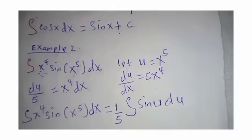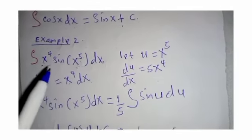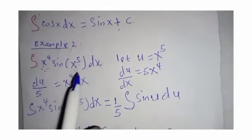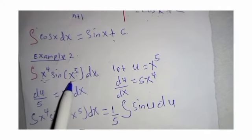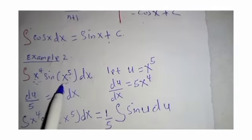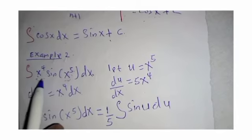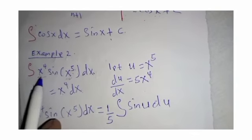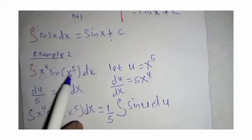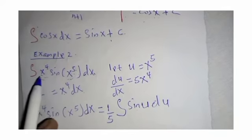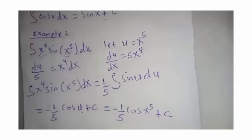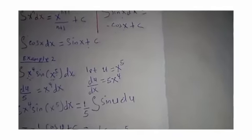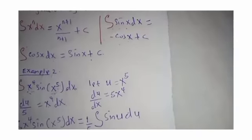So learners, what you need to do is to check the method of substitution. You normally work if part of the integral is a derivative. Like here, x power 5, it has the relationship because when we differentiate x power 5, we are going to get x power 4. So that is when you apply the method of integration by substitution.